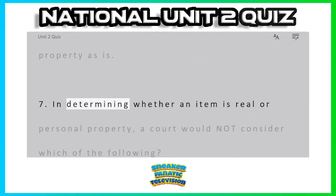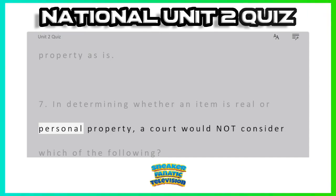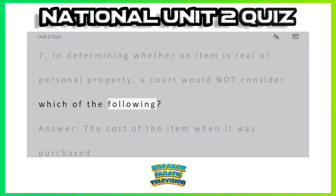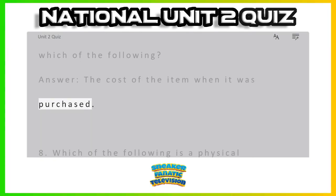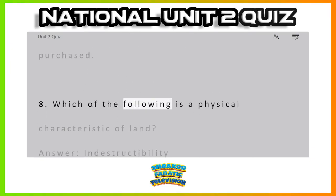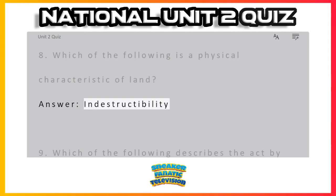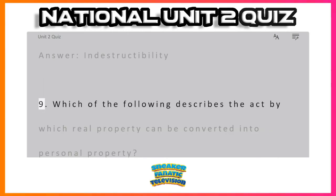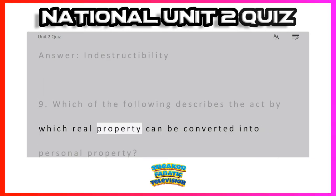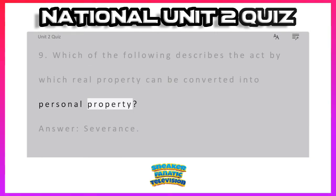Question 7: In determining whether an item is real or personal property, a court would not consider which of the following? Answer: the cost of the item when it was purchased. Question 8: Which of the following is a physical characteristic of land? Answer: indestructibility. Question 9: Which of the following describes the act by which real property can be converted into personal property? Answer: severance.